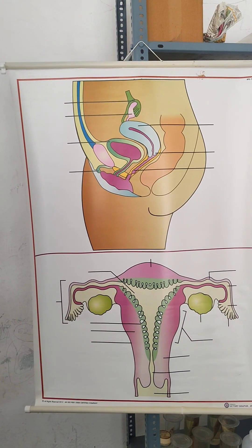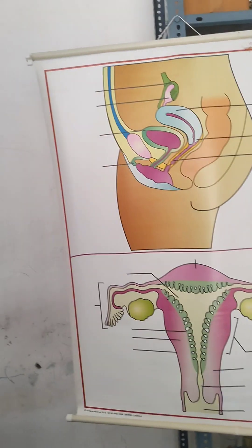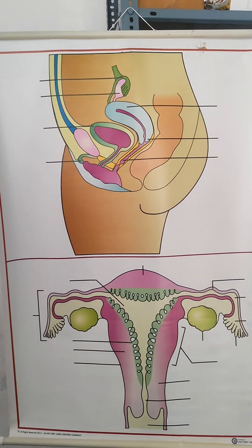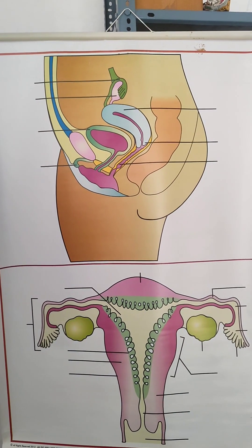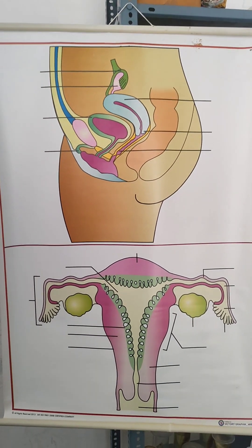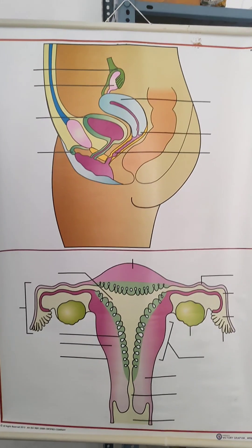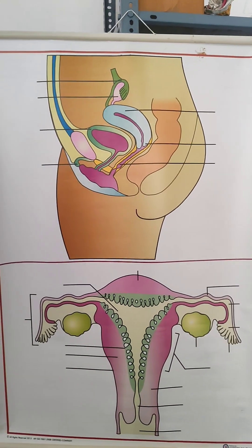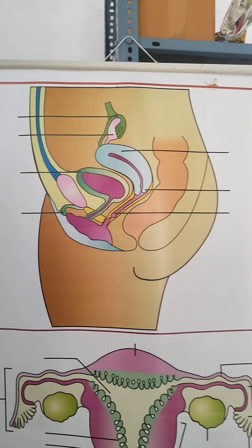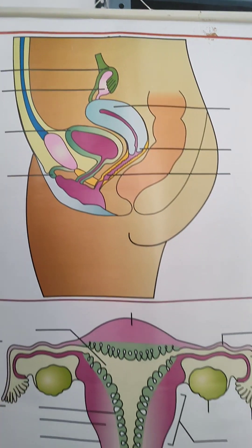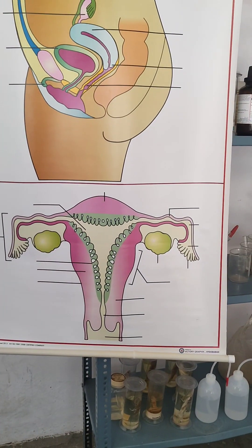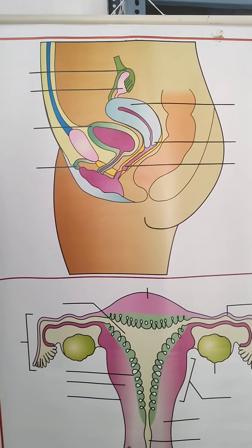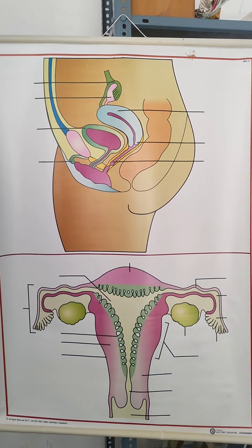Then, come to the female reproductive system. You have to draw a diagram — the upper diagram only is needed. The parts to label are: Fallopian tube, ovary, uterus, cervix, vagina, and urinary bladder. You have to mention at least 4. This is the first part of the unlabeled chart, for 6 marks.